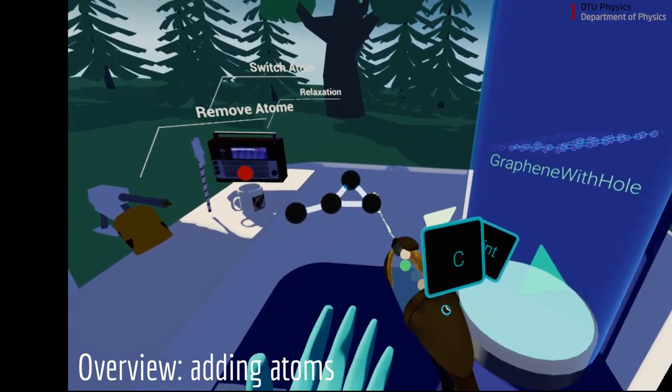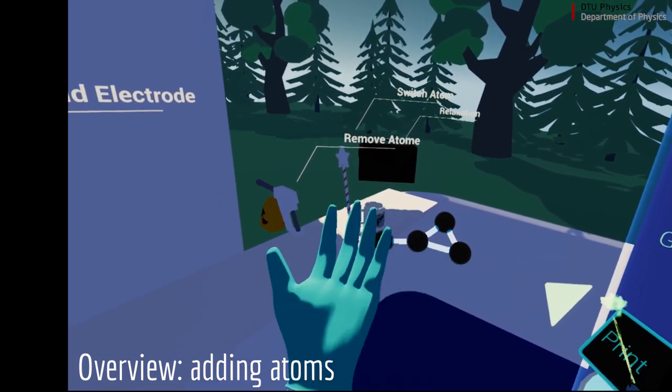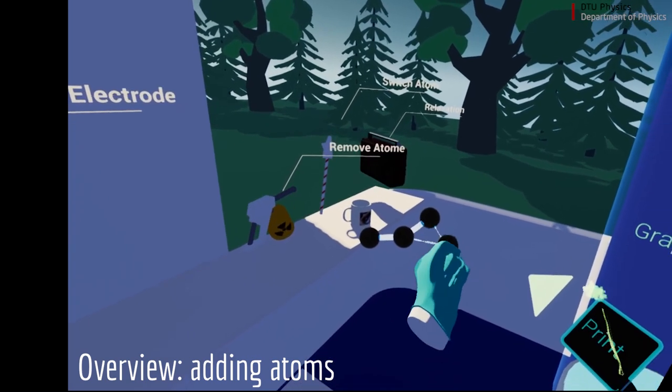In this case, carbon atoms. And what you can see is that right away, if the atoms are within bonding distance, they will start bonding.